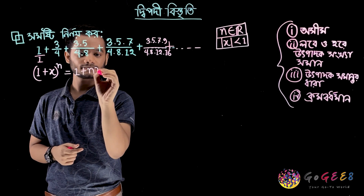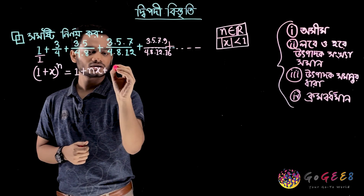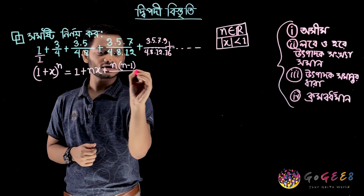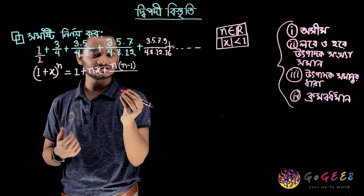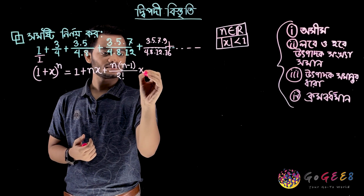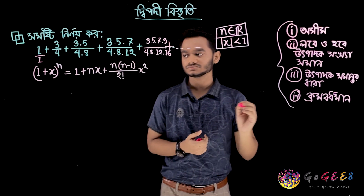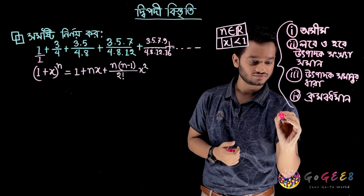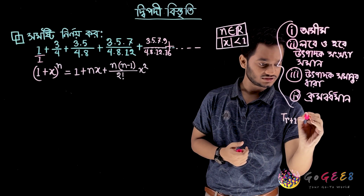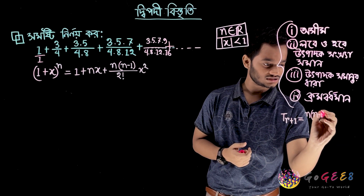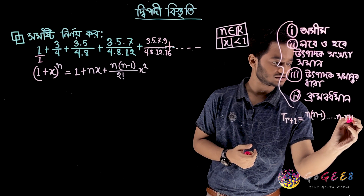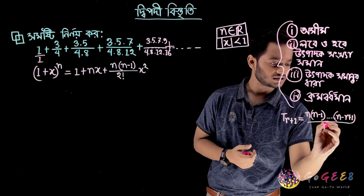We need to simplify it: 1 plus nx plus n into n minus 1 divided by 2 factorial x to the power 2. Then 1 plus x to the power, initial form r plus 1, to both n into n minus 1 into n minus 2 and n minus r plus 1 divided by r factorial.